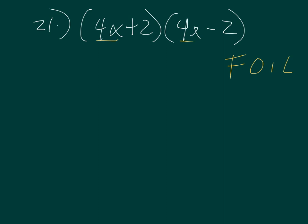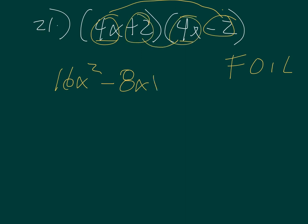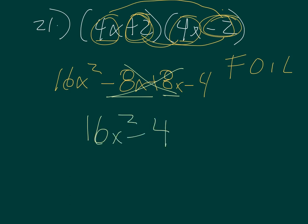Last one. 21. 4x plus 2 times 4x minus 2. Let's see what happens when we FOIL. First 4x and 4x gives me 16x squared. Outer 4x negative 2 gives me minus 8x. Inner plus 2 times 4x is plus 8x. And then positive 2 and negative 2 is negative 4. If you look at the middle, negative 8 plus 8 cancels out. So I'm left with 16x squared minus 4. Good luck.